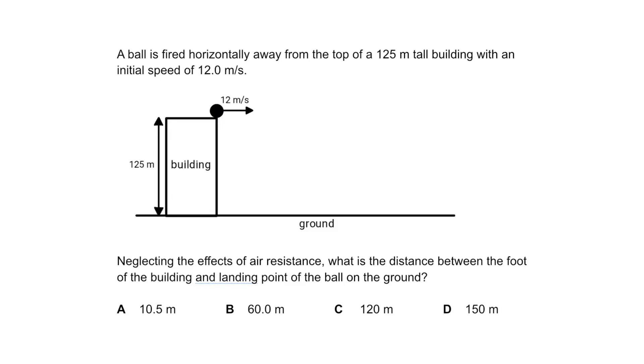In this question, a ball is fired horizontally from the top of a building. The building is 125 meters tall and the initial speed of the ball is 12 meters per second.